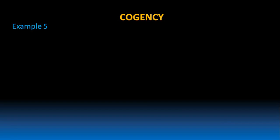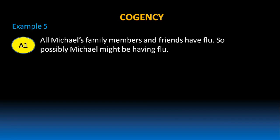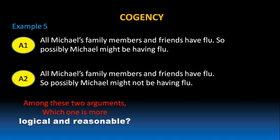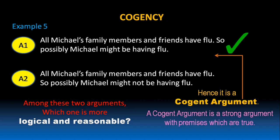Let's take one more example. Argument 1: All of Michael's family members and friends have flu, so possibly Michael might be having flu. Argument 2: All of Michael's family members and friends have flu, so possibly Michael might not be having flu. Among these two arguments, which one is more logical and reasonable? Argument 1 is more logical and reasonable, because when Michael's family members and friends are all having flu, Michael has more chances of having flu than not. Hence, it is a cogent argument. A cogent argument is a strong argument with premises which are true.